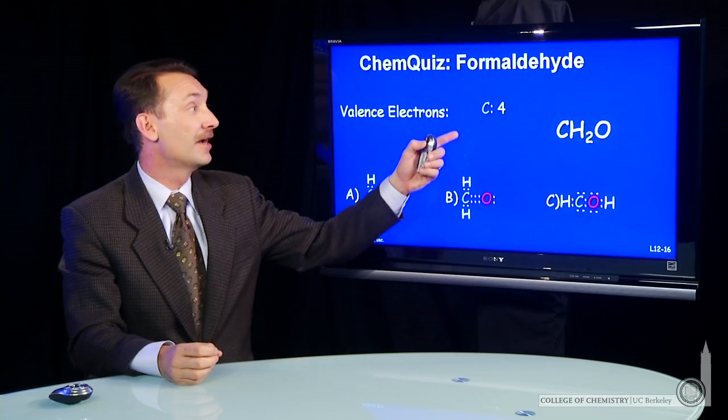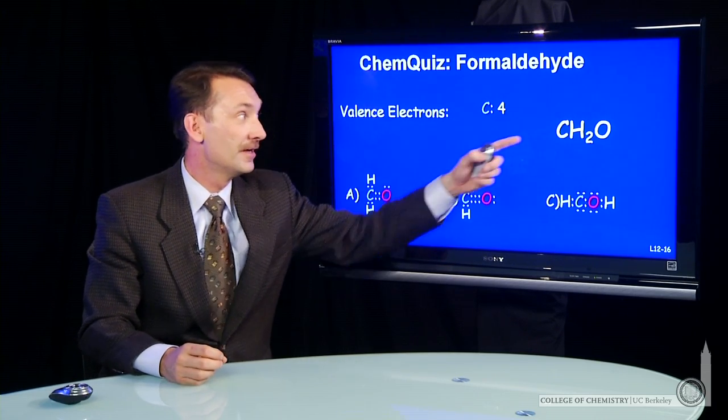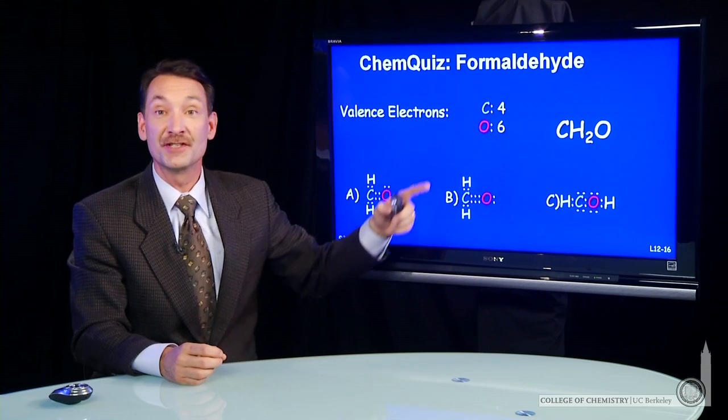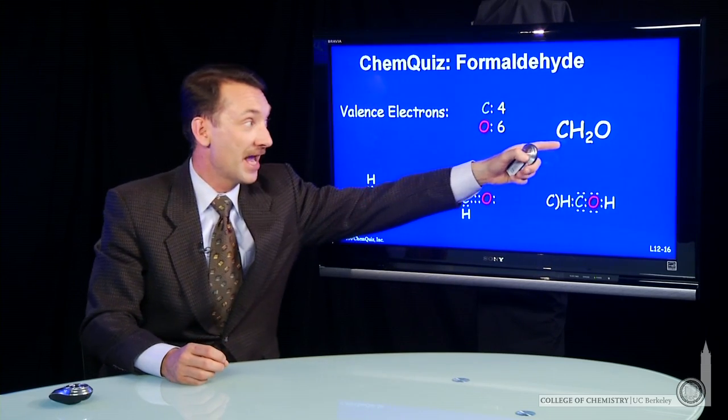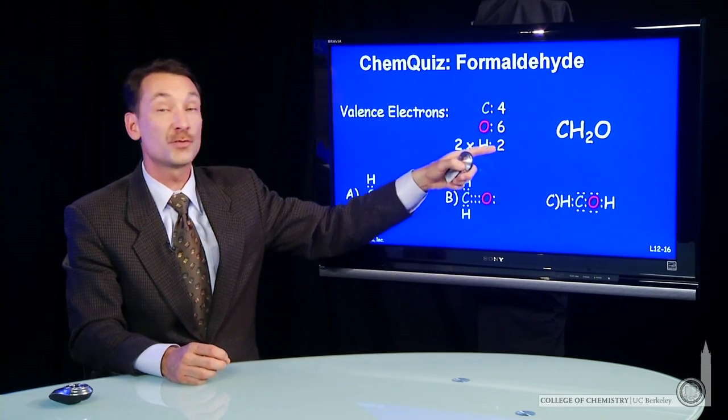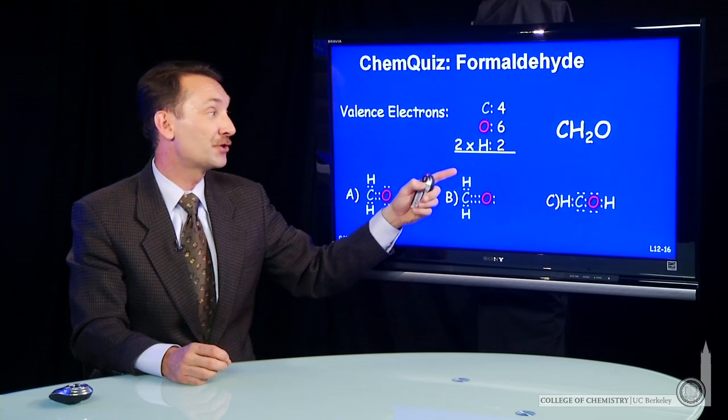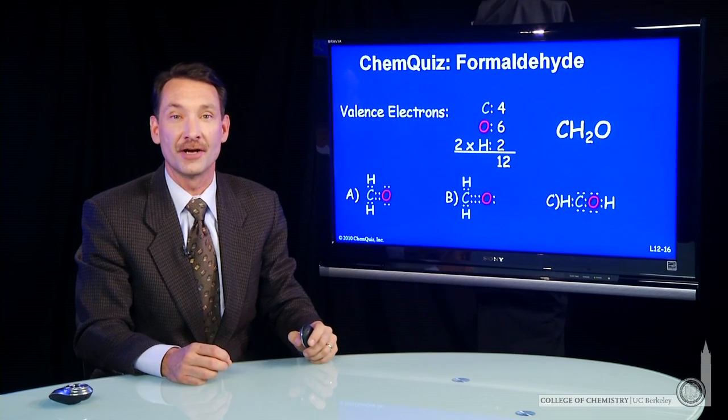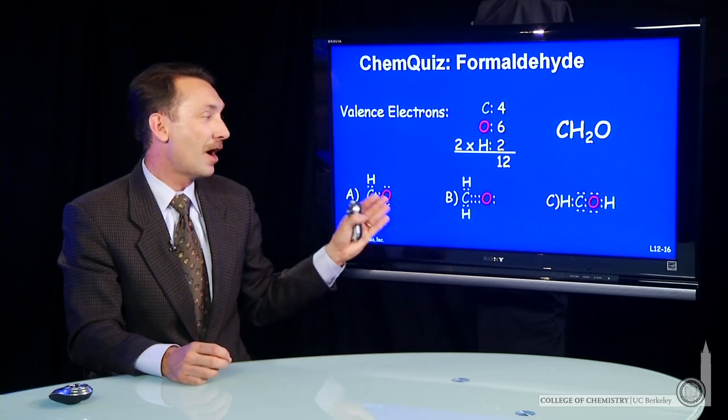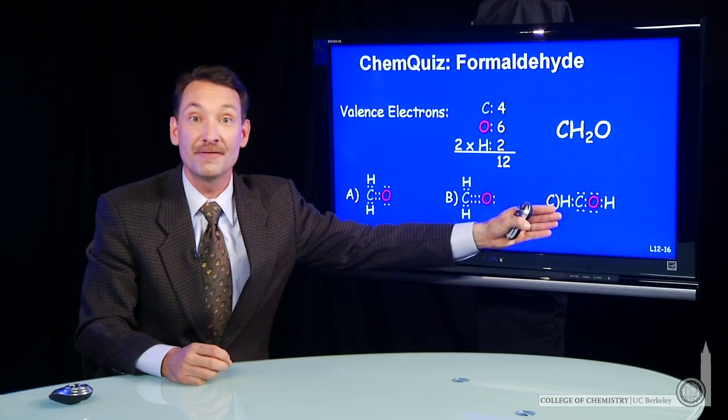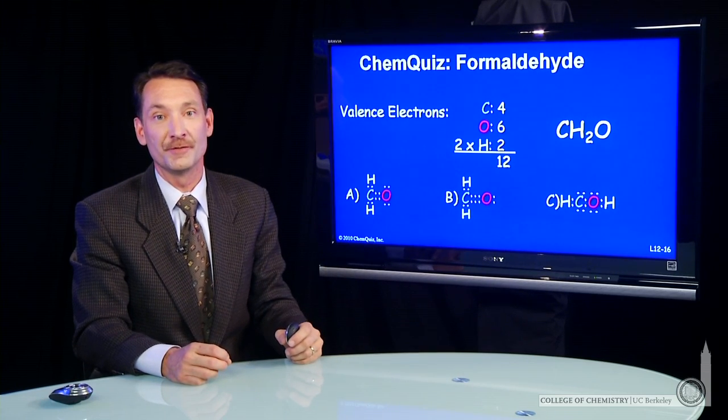So we'll take carbon, which has four valence electrons. We'll take an oxygen with six valence electrons. And we need two hydrogens, each has one valence electron. So that's a total of 12 valence electrons. So our structures each must have 12 valence electrons to hold them together.